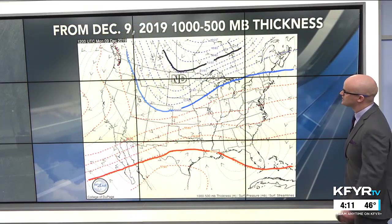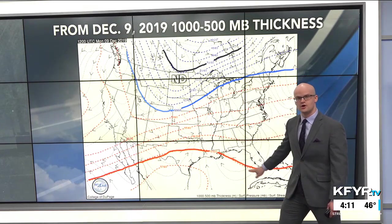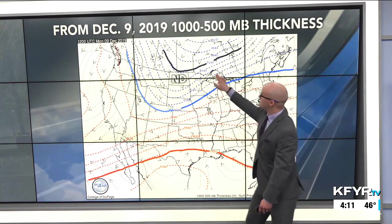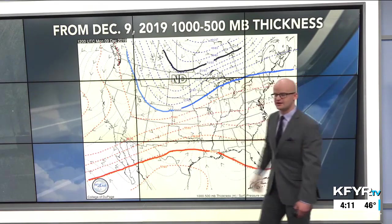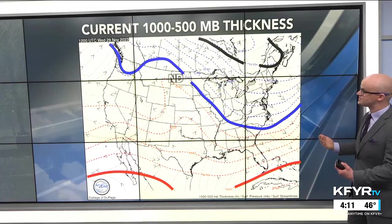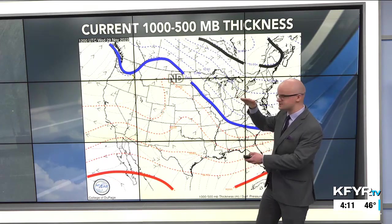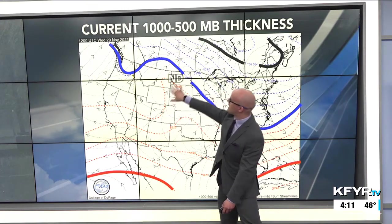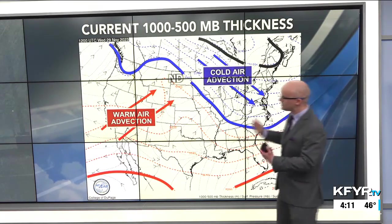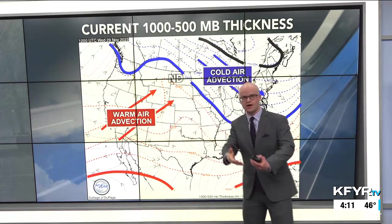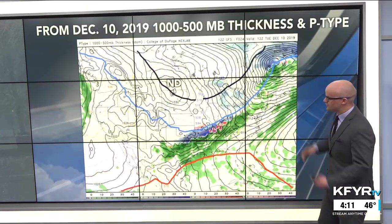Let's take an example from December 9th, 2019. This is the 1,000 to 500 millibar thickness plotted. The 570 line indicates where the tropical air is, well down to the south. The 510 thickness line is well up to our north. The 540 line indicates where we have the clashing of air masses — that was when we had a cold day. Compared to today, where the 540 line is to our north and east, indicating milder air coming into our area, with the polar air much farther north.